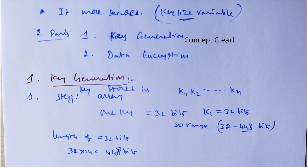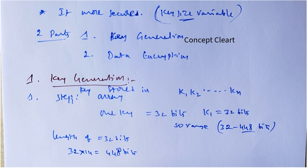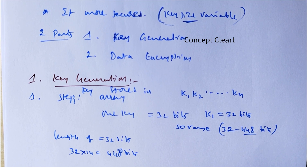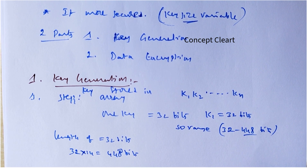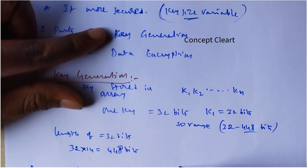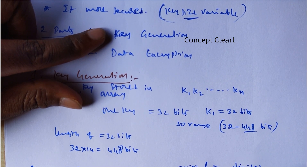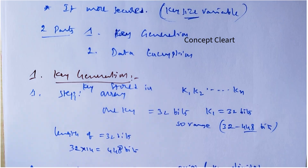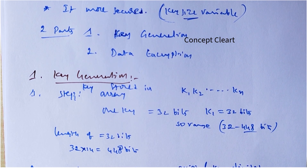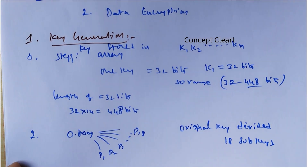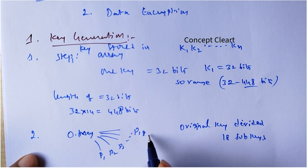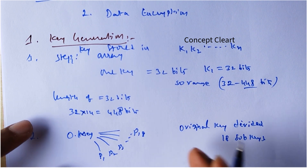In step two, the original key is divided into 18 subparts — like p1, p2, p3 up to p18. The original key is divided into 18 subkeys.